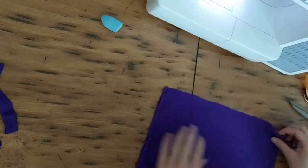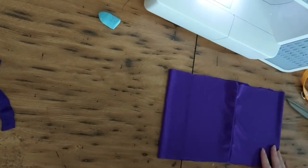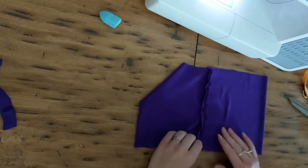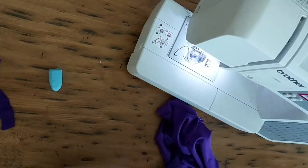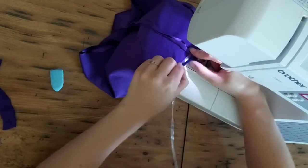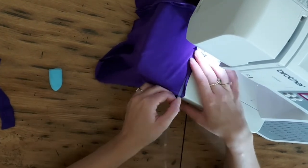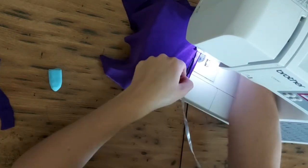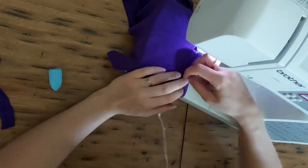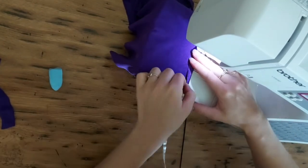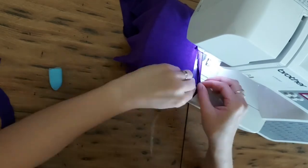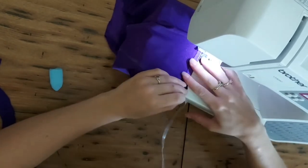The next step will be adding a hemmed edge along the top. Since this material is more of a flimsy lycra material and it might sag, I added an elastic along the top edge of the hem. Now this one I just sewed in. The other option you could do is sew a hollow channel and then feed the elastic through after.